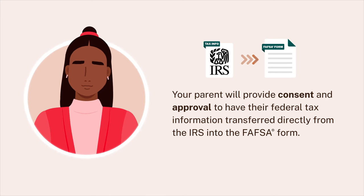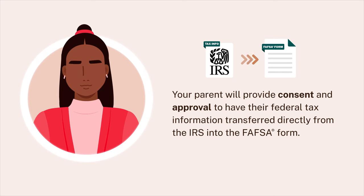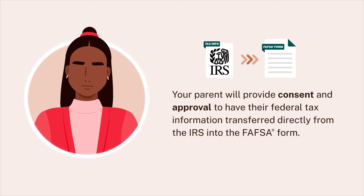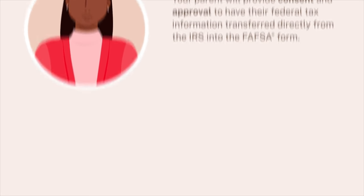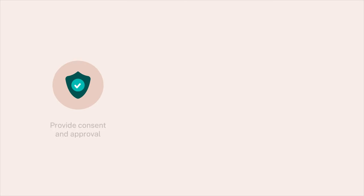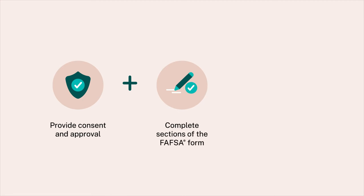This consent and approval is required even if your parent doesn't have a social security number, didn't file taxes, or filed taxes outside of the United States. After your parent provides their consent and approval, the required information in the parent section of the FAFSA form and their signature, if no additional information is required, your form can be submitted.